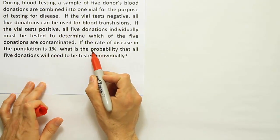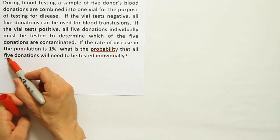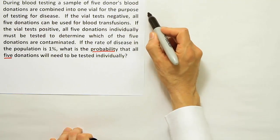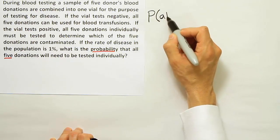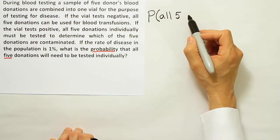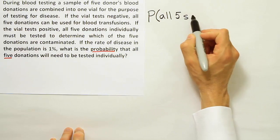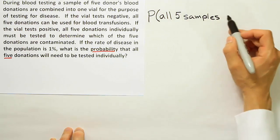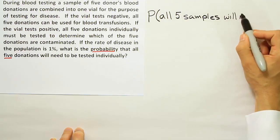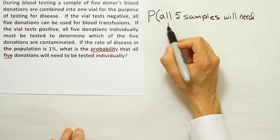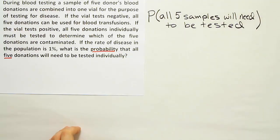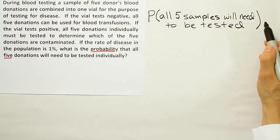So it's a probability question, and it asks for the probability that all five donations will need to be tested individually. I want to write down a probability statement — find the probability that all five samples of blood will need to be tested. That's what we're looking for in this problem.